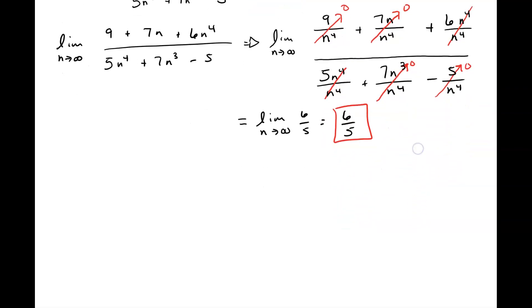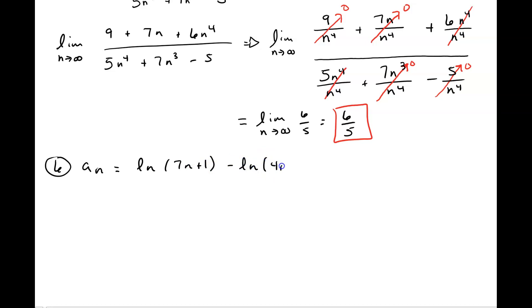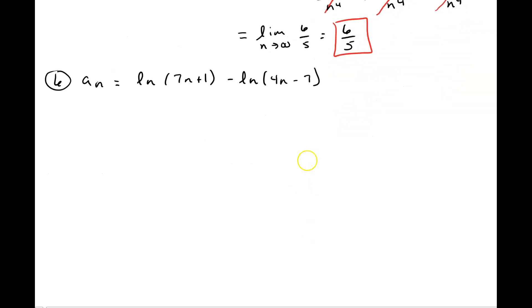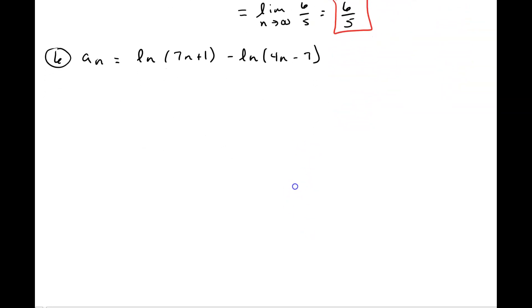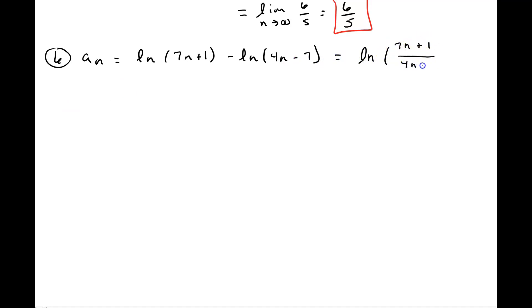Let's take a look at another example — number 6 — involving some natural logs. You should see two natural logs with some subtraction. Put on your pre-calculus or college algebra thinking hat: laws of logarithms — what does subtraction of logarithms mean? It means we need to divide. So we write this as the natural log of (7n + 1) divided by (4n − 7). Now let's take the limit as n goes to infinity.